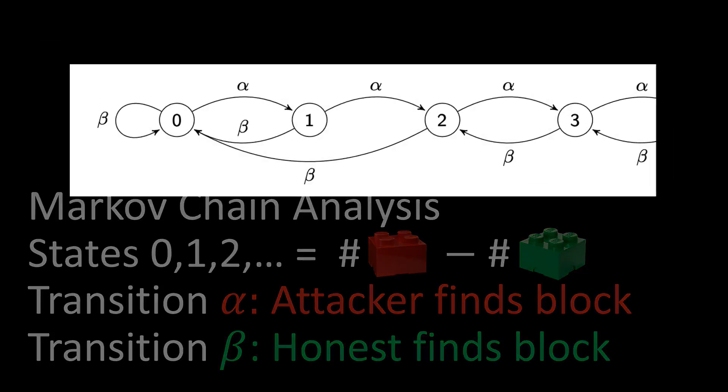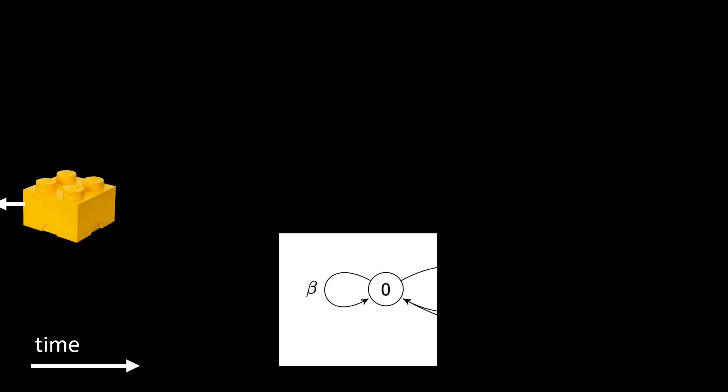Most likely, in state 0, the honest miners find a block, so we append a green block, and we experience a transition event beta. In this case, the green block is published, and everybody agrees on it. We might say that this green block is like a yellow block again, since everybody agrees on it.